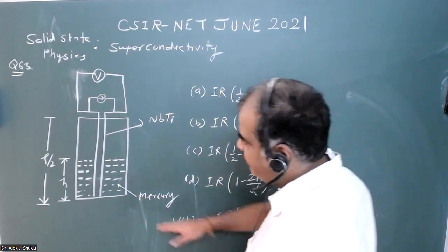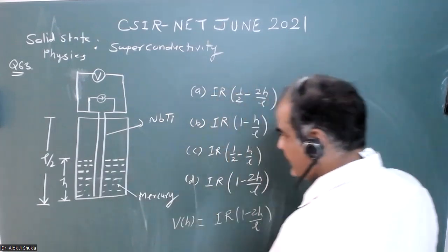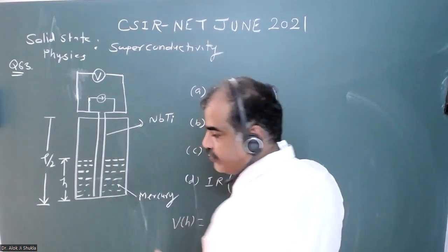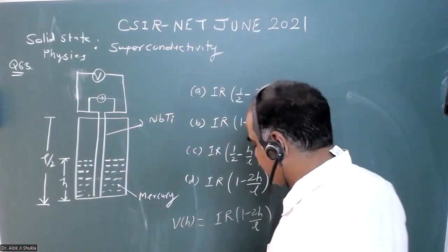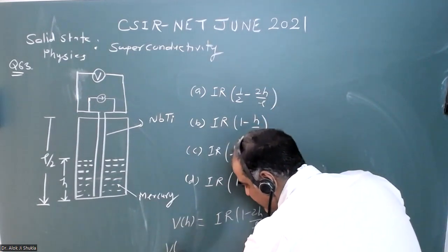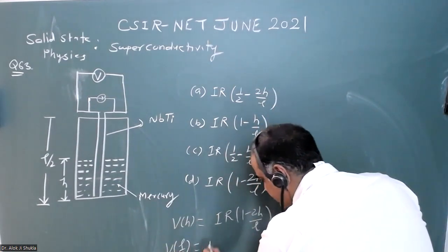If it is fully filled up to L/2 length, then this full wire will become superconducting and the resistance will be zero.